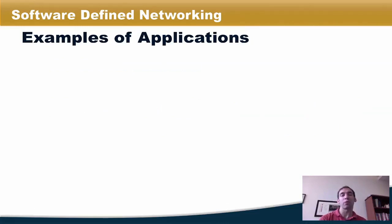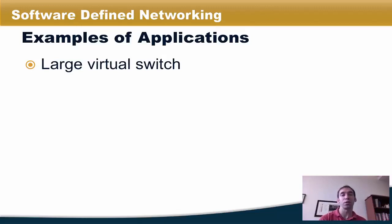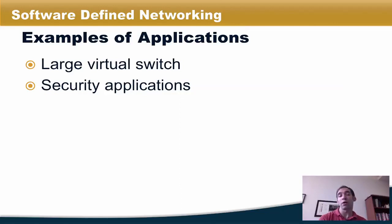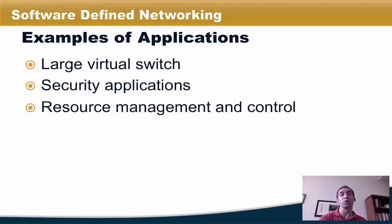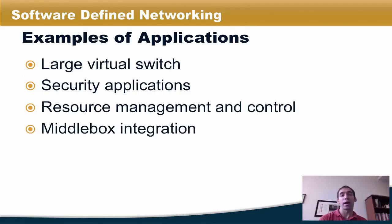There are many examples of possible applications that could use a northbound API. One is creating a large virtual switch — making it appear as though the entire network is controlled by a single virtual switch. This type of abstraction can simplify many network management tasks. We can also use a northbound API to implement various security applications, as well as resource management and control applications such as traffic engineering or load balancing. Middleboxes are proliferating and a northbound API could allow network operators to integrate middleboxes with applications running in coordination with switches, routers, and other devices in the network.